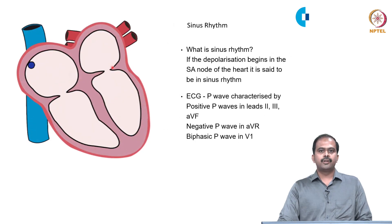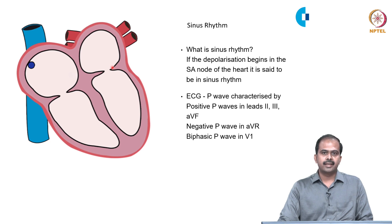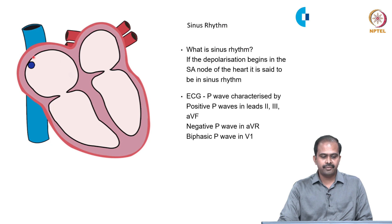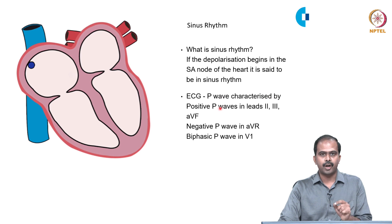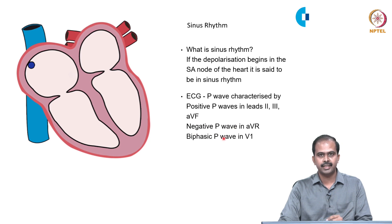Before discussing sinus bradycardia and sinus tachycardia, let me explain sinus rhythm. If the depolarization begins in the SA node of the heart, it is said to be in sinus rhythm. On the ECG, sinus rhythm is characterized by positive P waves in leads 2, 3, and AVF; a negative P wave in AVR; and a biphasic P wave in V1.